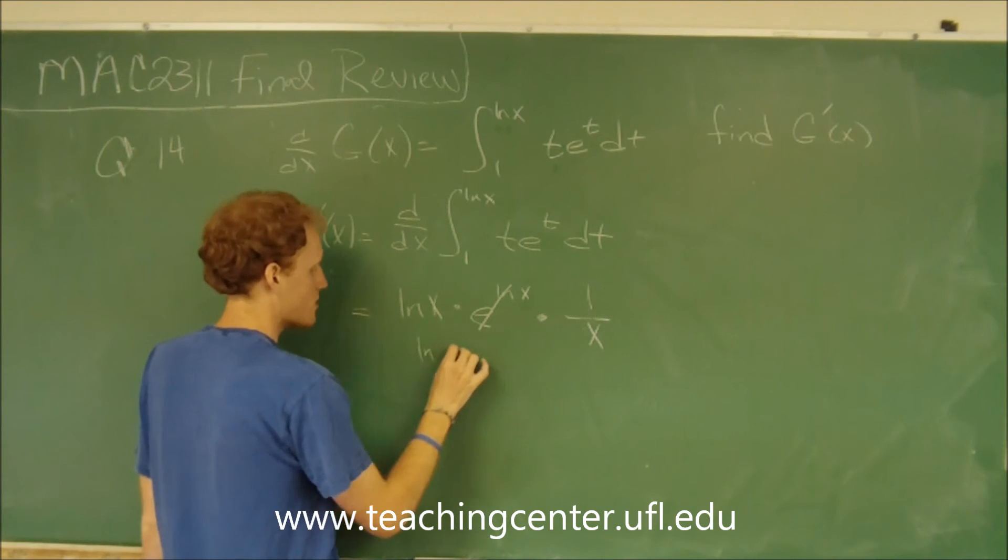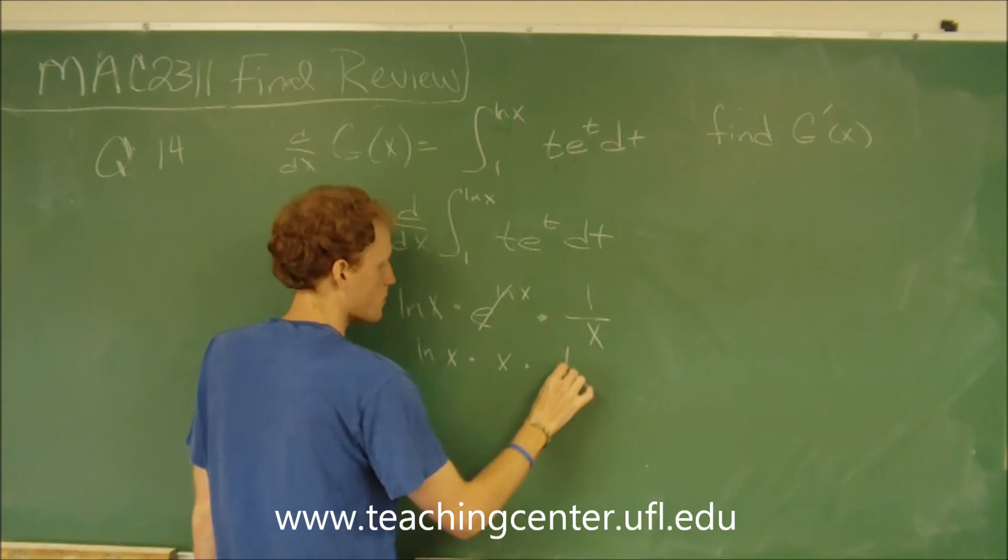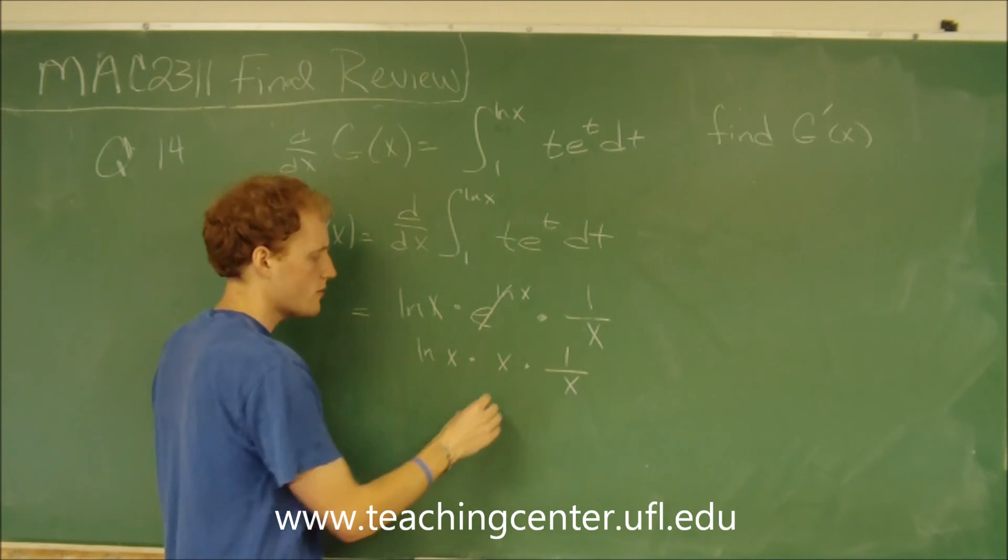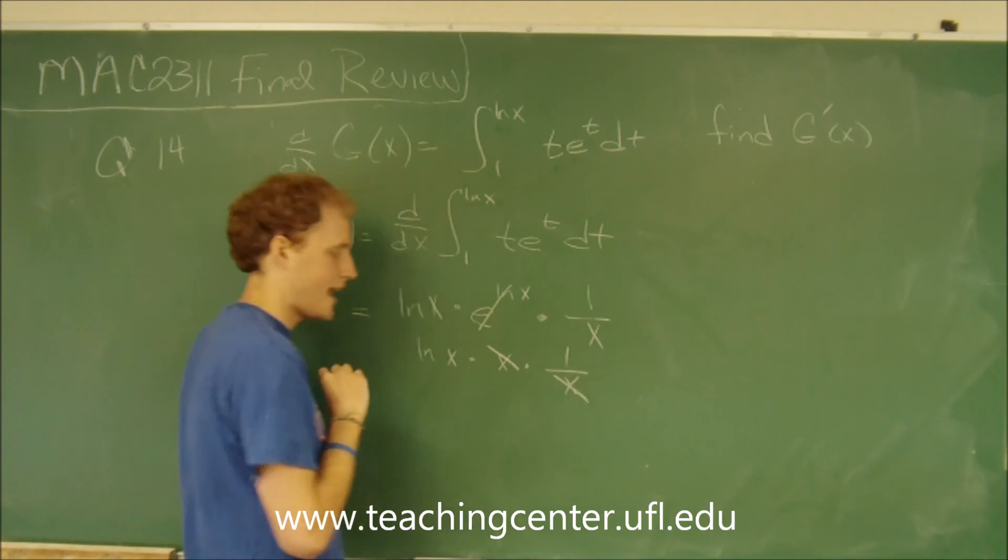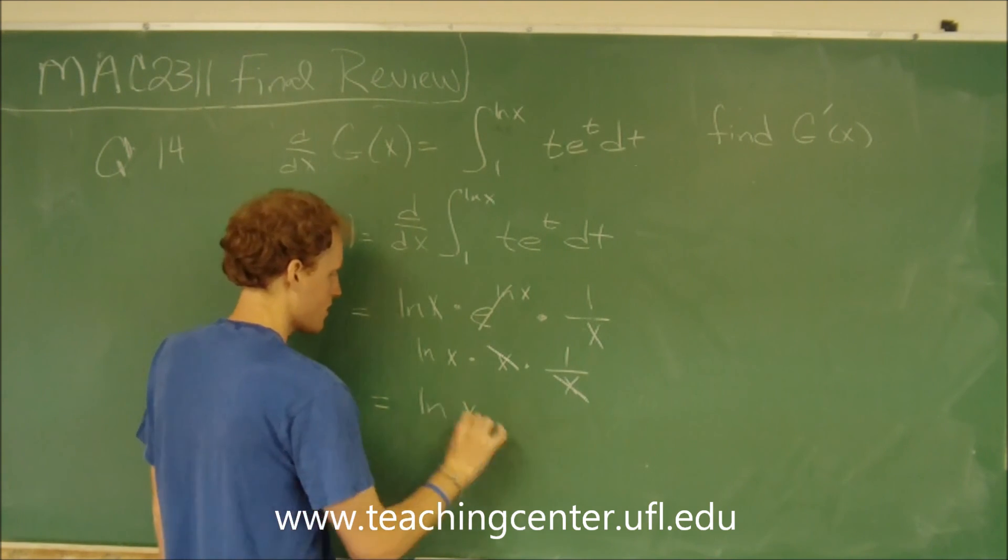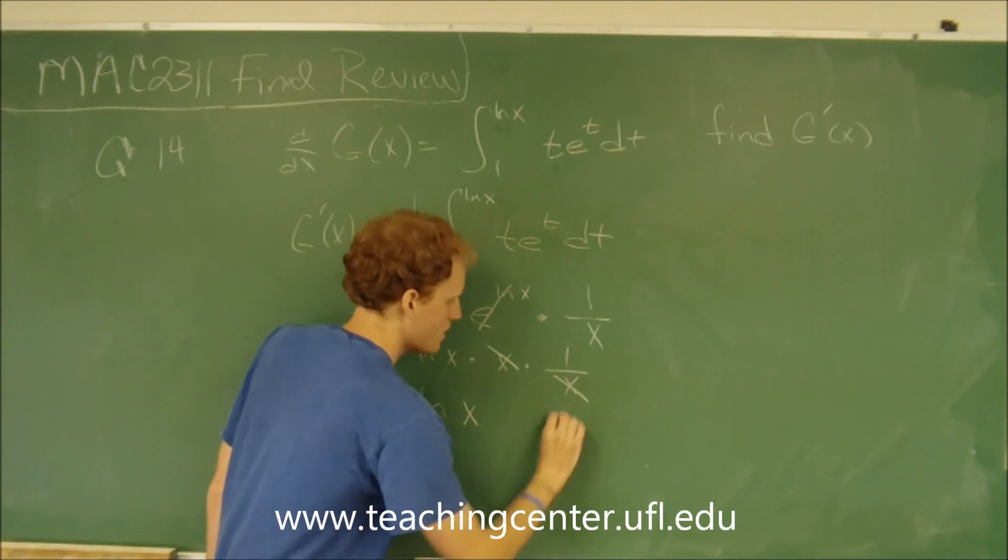So we're left with natural log of x times x times 1 over x. The x times 1 over x cancel out, and we're just left with the natural log of x. That is answer d.